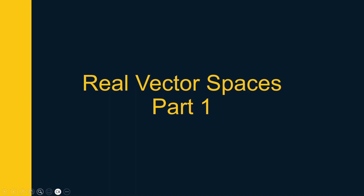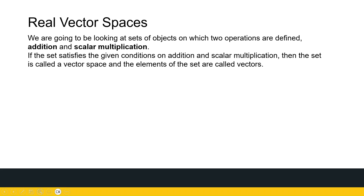Looking at real vector spaces, we first have to see what these are made up of. We're going to be looking at a set of objects, and we'll talk more detail about the objects later, but it's a set of objects on which two operations are defined: addition between the objects and a scalar multiplication — a real number scalar multiplied by one of the elements of this set.